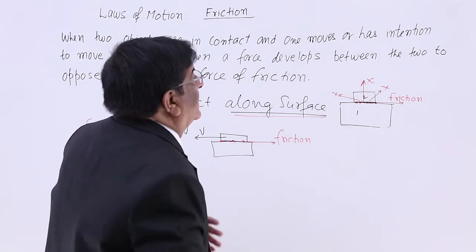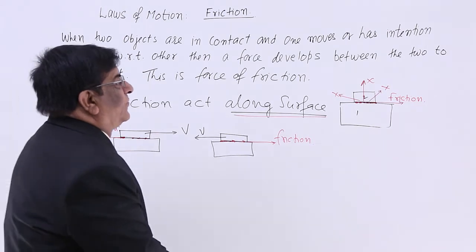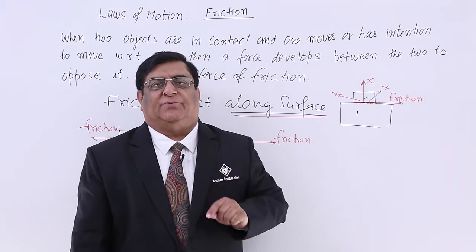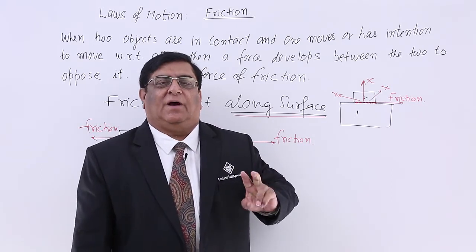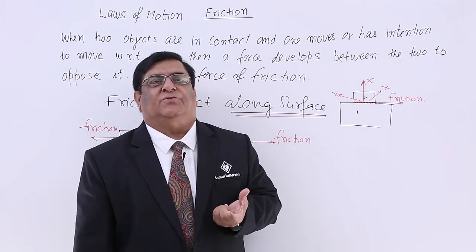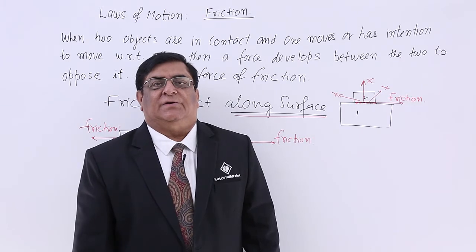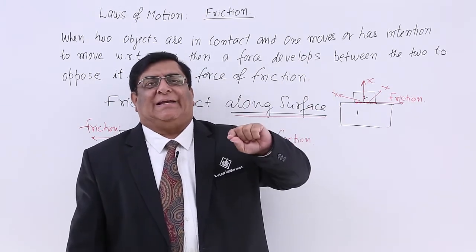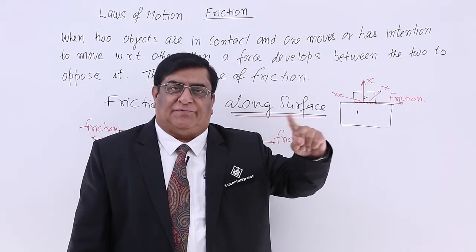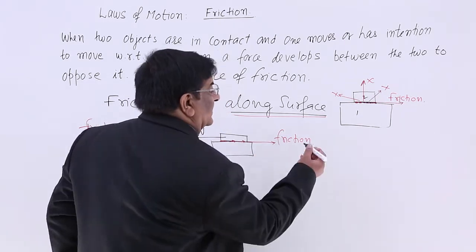What should be the cause of friction? What type of force is it? Basically, we have studied that there are four types of forces only, out of which two are inside the atom — strong nuclear force and weak nuclear force. There are two forces visible to us in the world: gravitational force and electrical force. So friction has to be one of them, and friction is an electrical force.